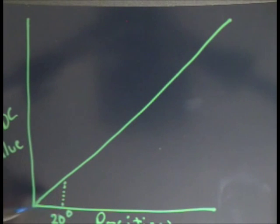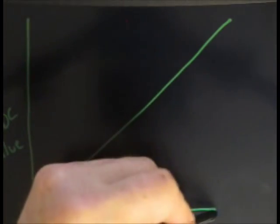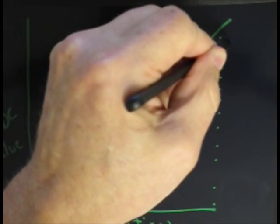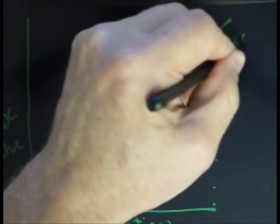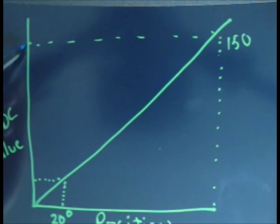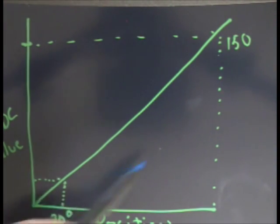30 degrees corresponds to a specific ADC value. The maximum is about 150 degrees, which corresponds to its own ADC value. Because this is a linear line, I can calculate the slope,